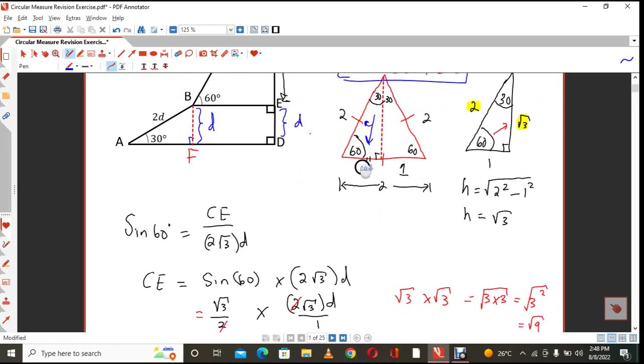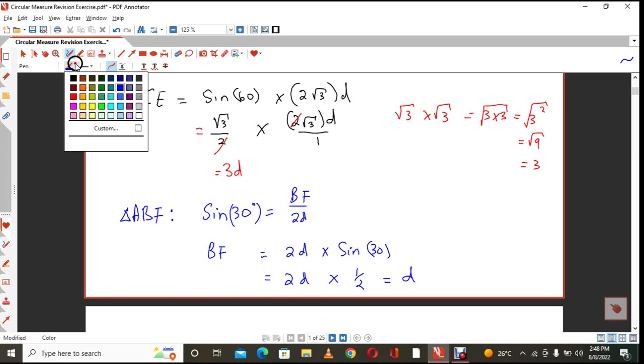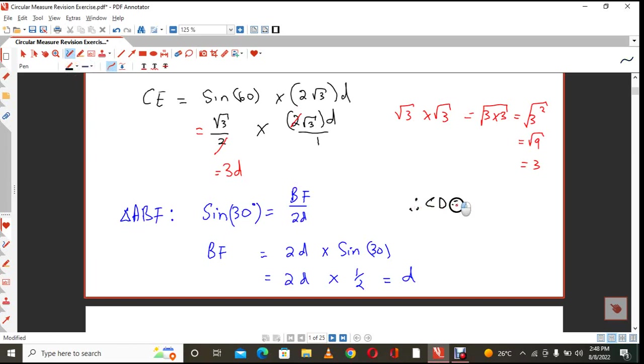So CD equals CE plus ED. Therefore, CD will equal to 3D plus D, which CD then is nothing but 4D.